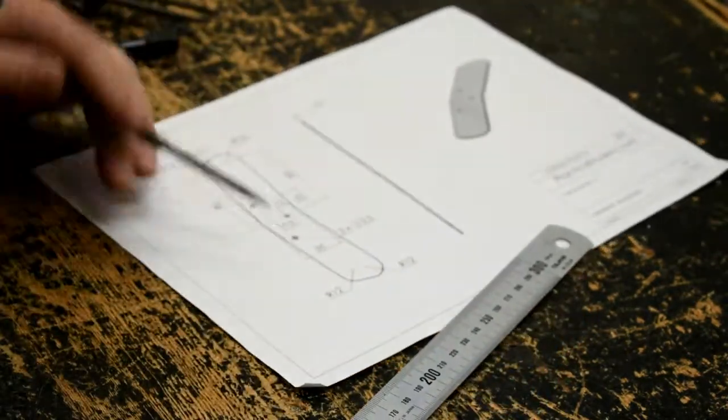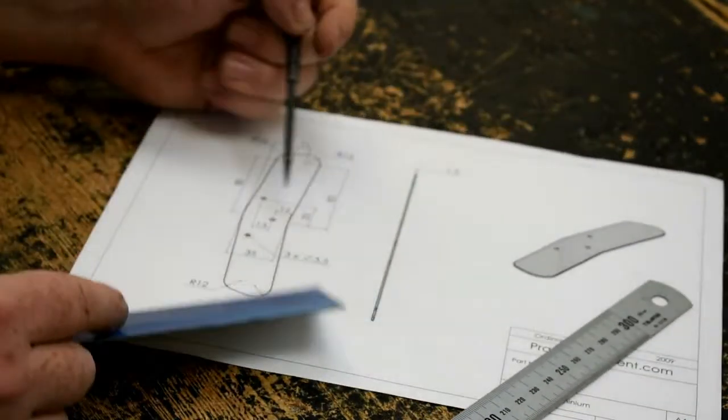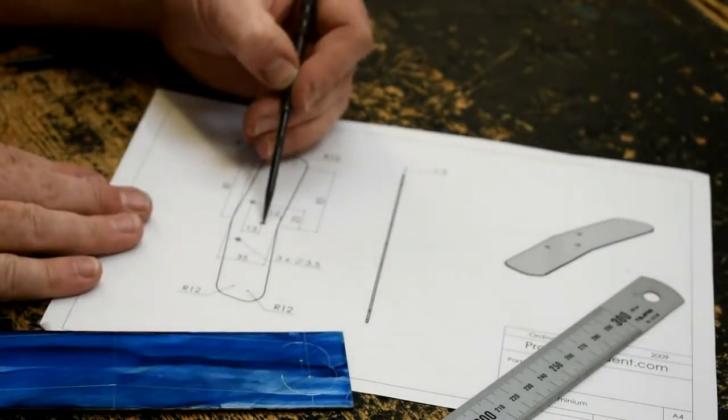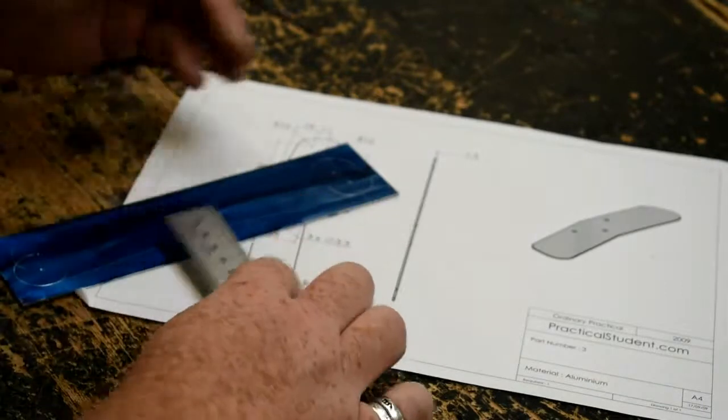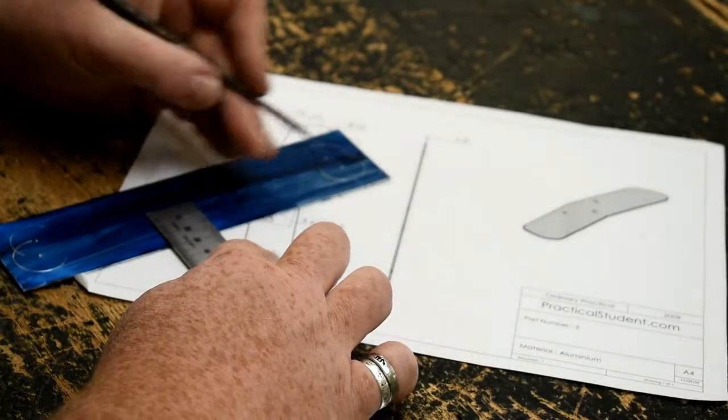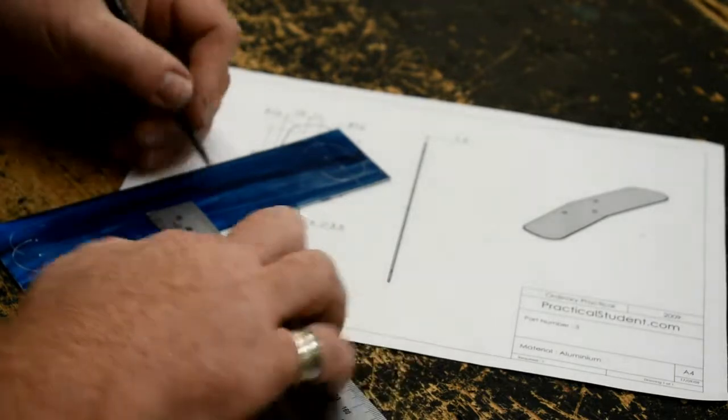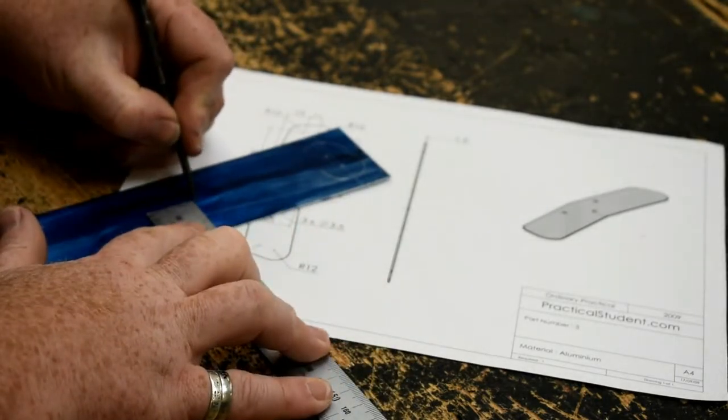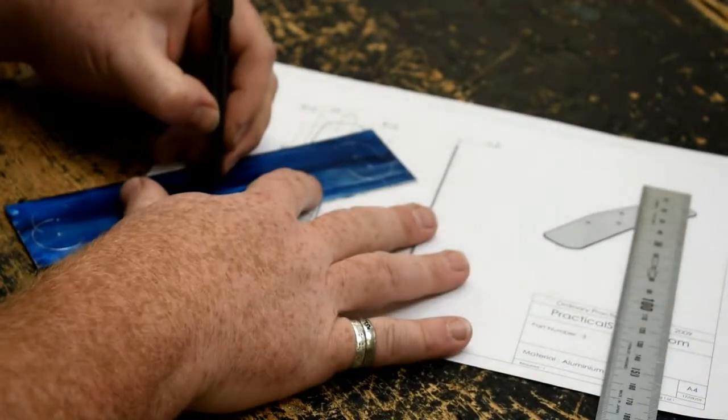Next we need to mark for the three holes. One, two and three. Our drawing tells us that this first one is 12mm from the back in. So that's easy enough to find. So I have 12 at the point that I want to start at and at the end of the ruler then is 0, 12mm away. I'm going to punch that because we're going to be drilling a hole there.